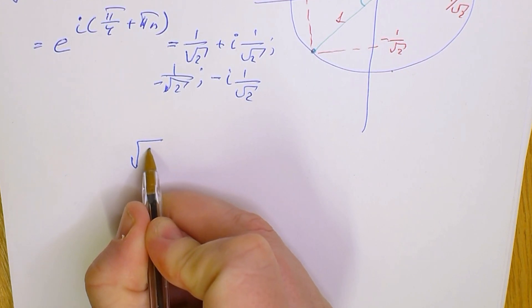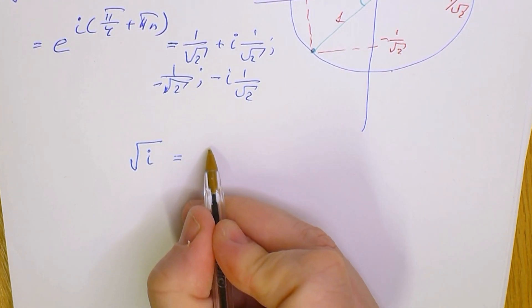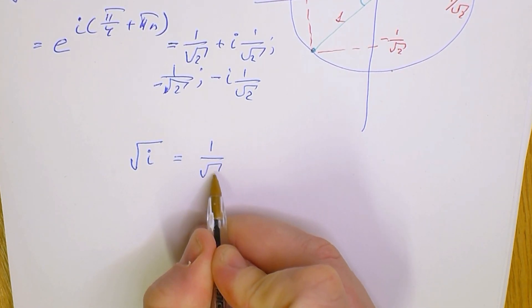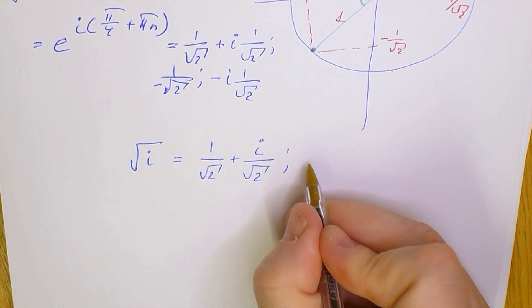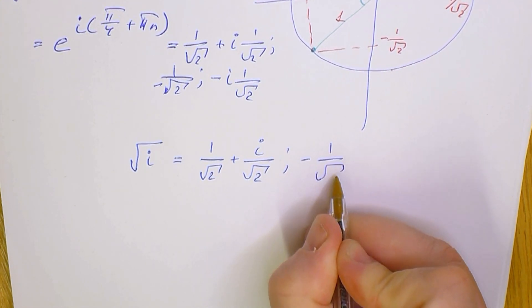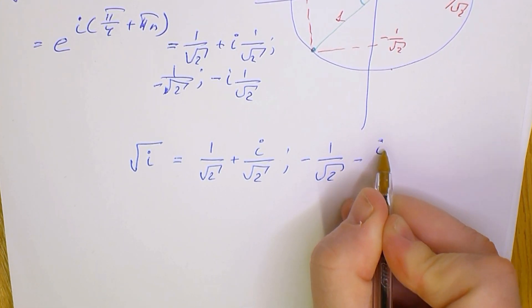The final answer is: square root of i equals 1 divided by square root of 2 plus i divided by square root of 2, and the second answer is minus 1 divided by square root of 2 minus i divided by square root of 2.